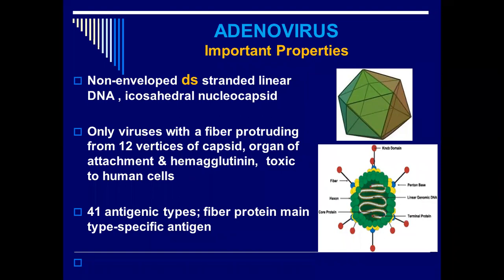The fibers that protrude from the vertices of the capsid of the adenoviruses help in the attachment of the virus with various organs. They are hemagglutinin in nature and they are toxic to human cells — meaning if you take these fibers out from the virus, they can cause disease in humans. The pathogenic potential of adenoviruses is due to the presence of these fibers, which act as organs of attachment and are also toxin-producing.